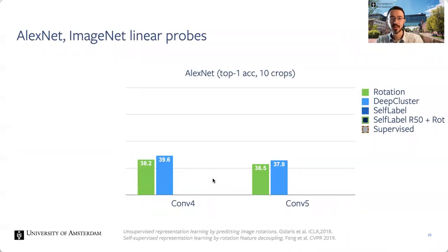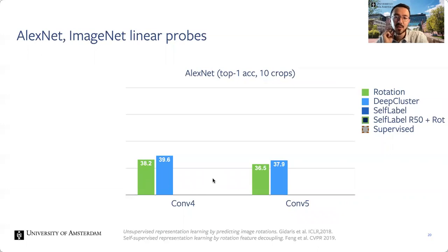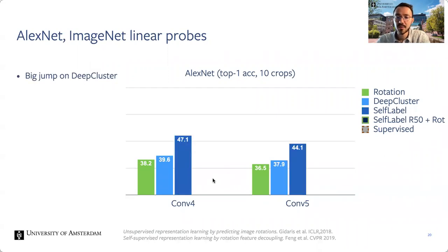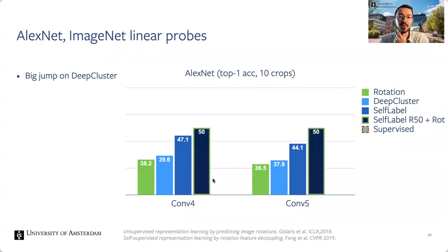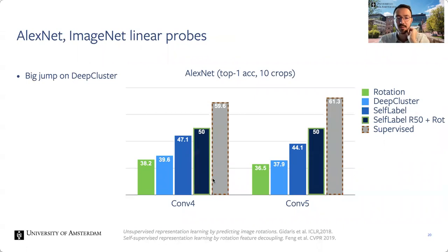You can explore all clusters without cherry-picking on our web page. Besides these clusters, we can also analyze the representations quantitatively using linear probing: we keep the network parameters fixed and at various layers add a linear layer to predict the ImageNet classes. Back then, state-of-the-art performance was around 40%. Using the same augmentations and training schedules, we achieve 47%, and by combining with self-label distillation and another proxy loss we achieve 50%. For Pascal VOC detection, another downstream task, we were already outperforming supervised pre-training.